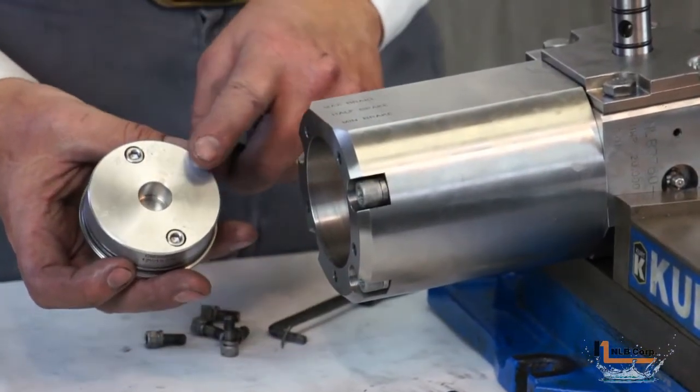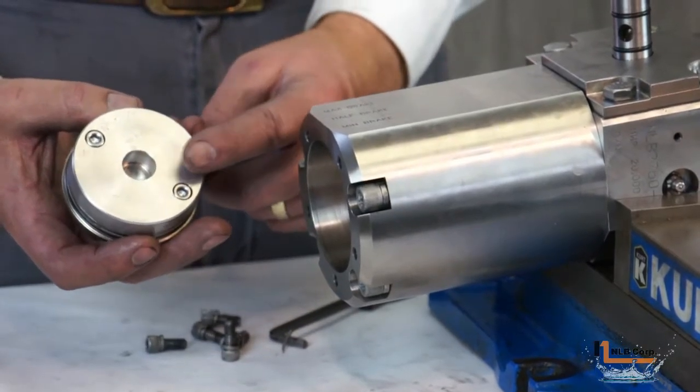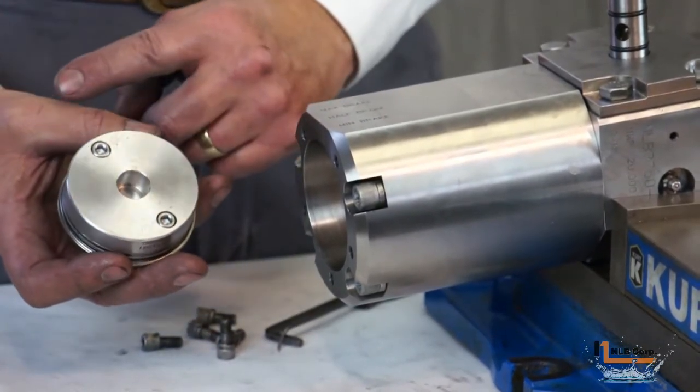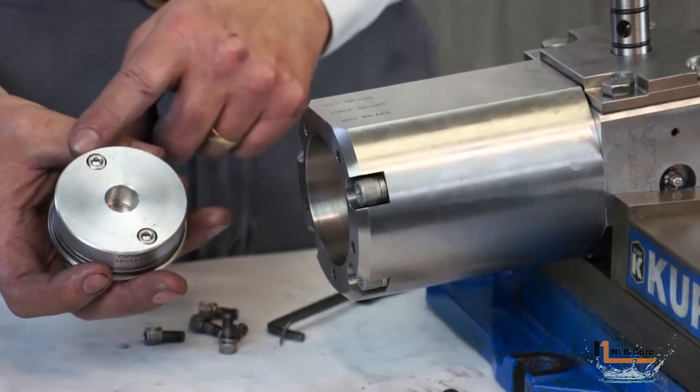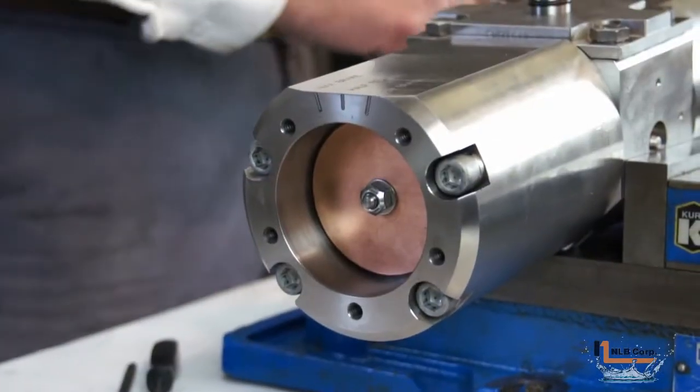You can now see the magnetic stator. Beneath this cover are 10 magnets with alternating poles. Inside the housing is a second stator. A copper rotor separates the two.